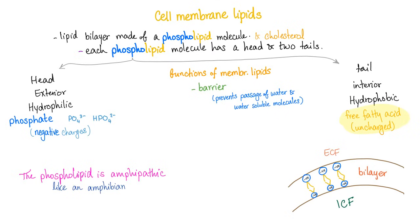The cell membrane is made of proteins, carbohydrates, and lipids — phospholipids, cholesterol, and others. Each phospholipid has a head and two tails. The head is phosphate and the tail is free fatty acids. The phosphates are negatively charged. We call this amphipathic — like the amphibian — because they have one face pointing to the outside world, which is water, and one face pointing to the inside, which is lipid.